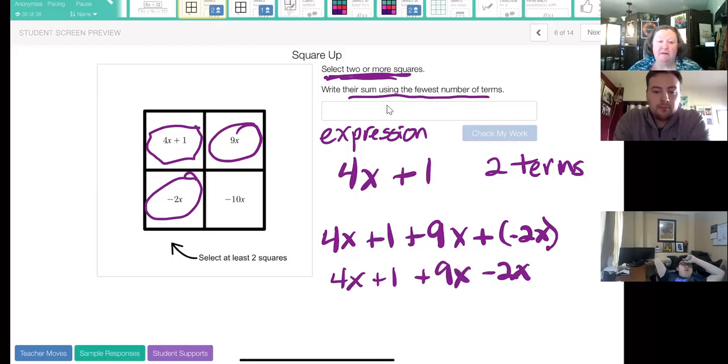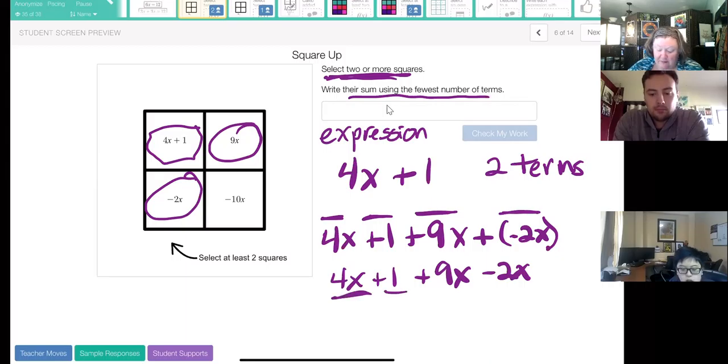A plus sign when we're looking at expressions and equations can often just be thought of as 'and'. And so what we're saying here is that we have now four terms: 4x plus 1 plus 9x and also a negative 2x. Those are our four terms. We have the same four terms here. We just left this plus sign that's up above invisible.